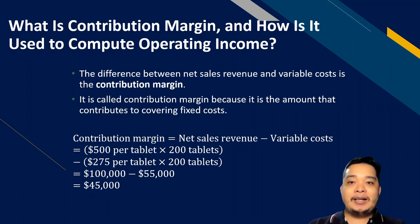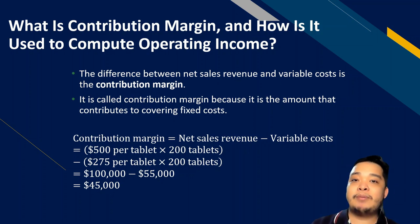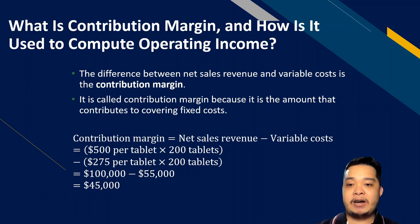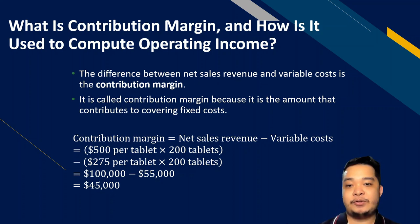Contribution margin is a very important concept. It is defined as the difference between net sales revenue and variable costs. It is called the contribution margin because it is the amount that contributes to the recovery of fixed costs. For example, if a company sells 200 tablets at a selling price of $500 and a variable cost of $275, variable costs move with volume, so selling 200 tablets means spending $275 times 200, which equals $55,000.